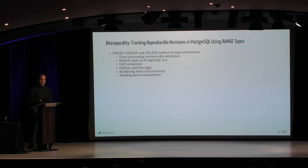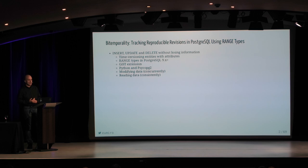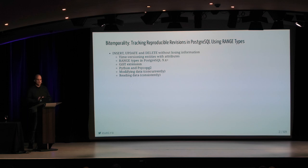We are going to see some time-versioning entities with attributes. I'm going to introduce you to the range types that have been in PostgreSQL since version 9.something, the generalized search tree extension, and then a few words about Python and Psycopg2, a library to access PostgreSQL, and we are going to modify data concurrently and read data consistently.